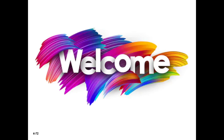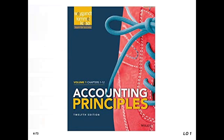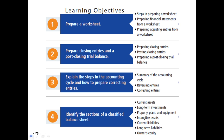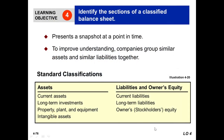Welcome. We are following this book. Today's lecture is on Identify the Sections of a Classified Balance Sheet, including Current Assets, Long-term Investments, Property, Plant and Equipment, Intangible Assets, Current Liabilities, Long-term Liabilities, and Owner's Equity. We will discuss one after another. Learning Objective 4: Identify the Sections of a Classified Balance Sheet. This is our topic today.